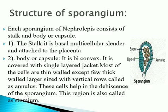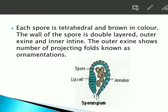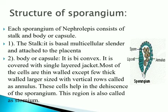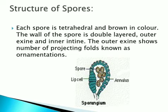The annulus cells are responsible for the dehiscence of the sporangium. The region from where dehiscence starts — where the opening develops for spore release — is called the stomium. This is about the structure of sporangia.